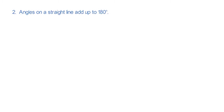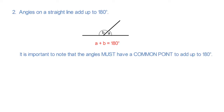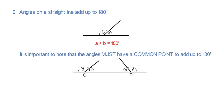Point 2. Angles on a straight line add up to 180 degrees. In this diagram the angles marked A and B add up to 180 degrees. It is important to note that the angles must have a common point to add up to 180 degrees.